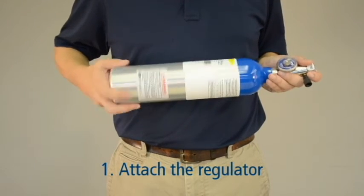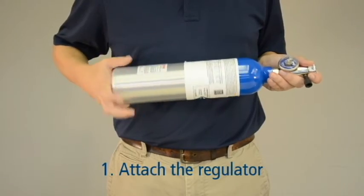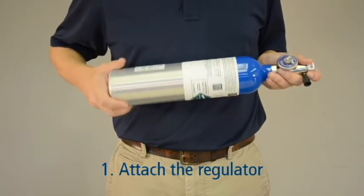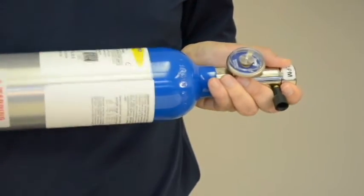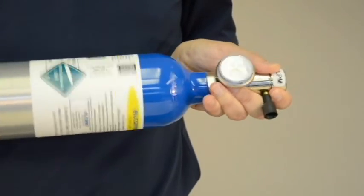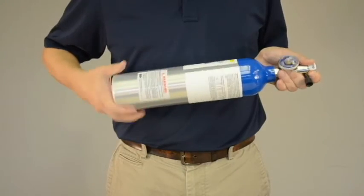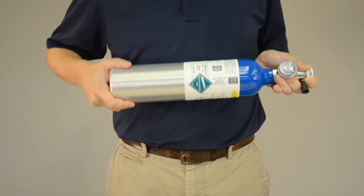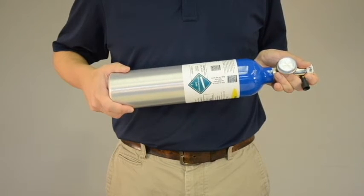For safety purposes, point the regulator end of the canister away from your body and away from others. Twist the regulator securely in place, making sure you don't over-tighten. You may hear a pop or a hiss sound as you tighten the regulator. This is normal.